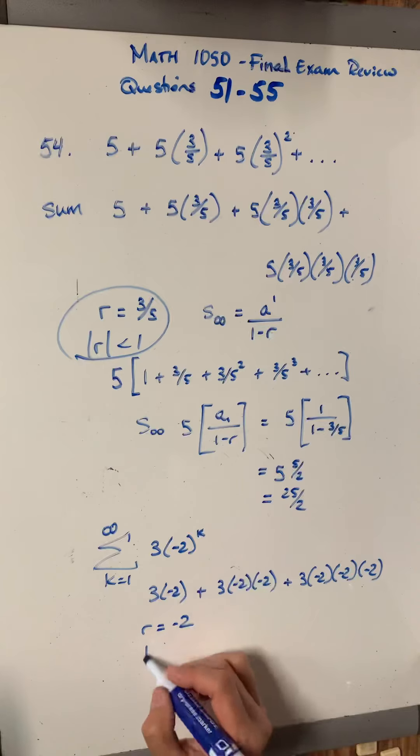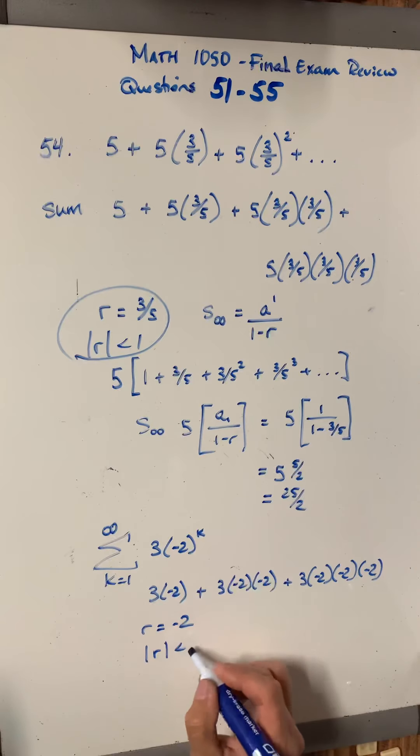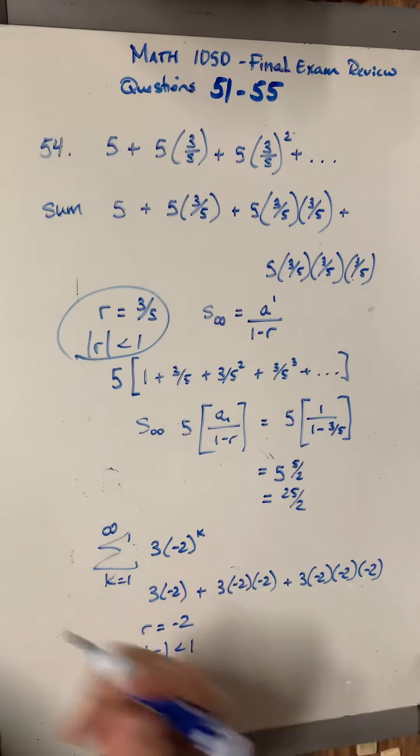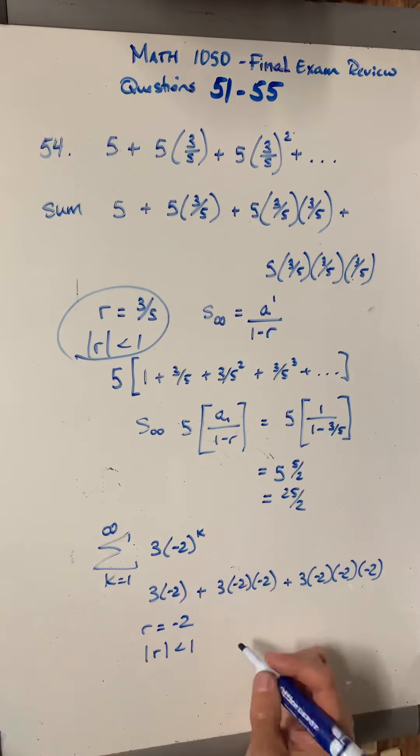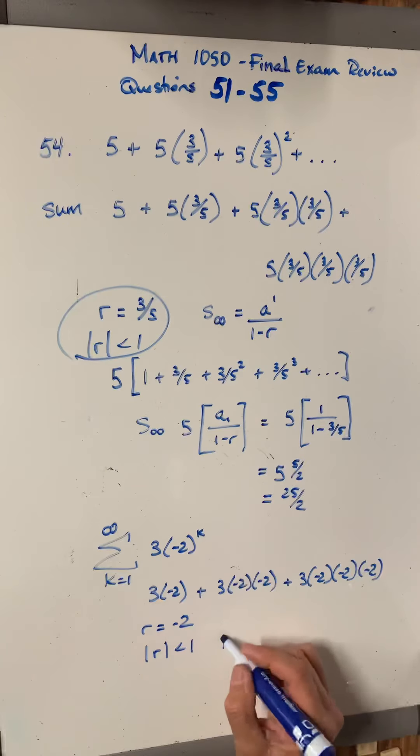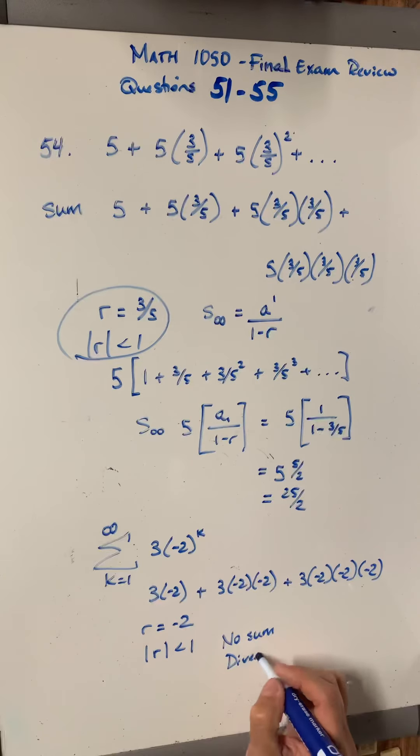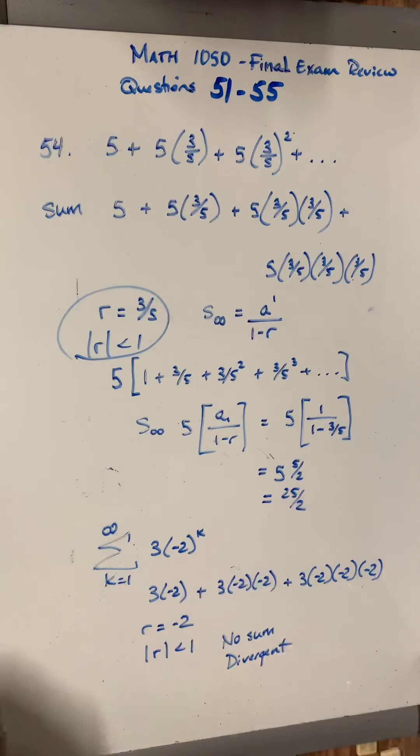So the question is, is the absolute value of r less than 1? And the answer is no. The absolute value of r is 2. So this is not a fraction. This is not a number smaller than 1. So therefore, there is no sum. We call that divergent if they give you that option. There's no answer to that.